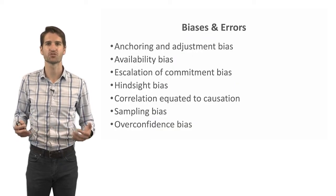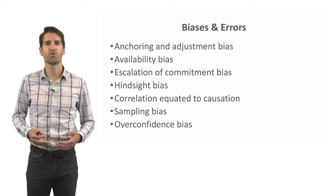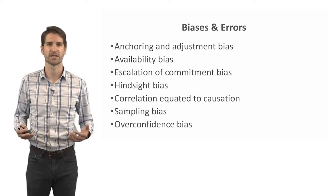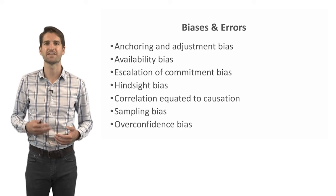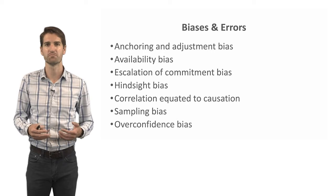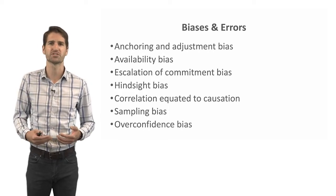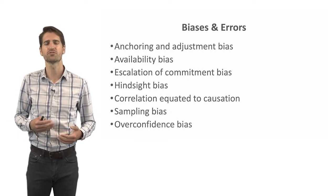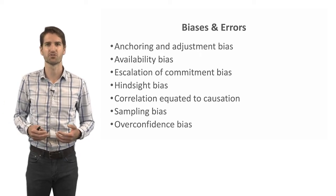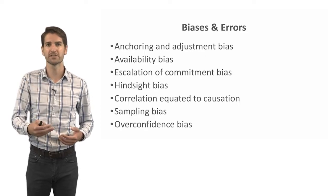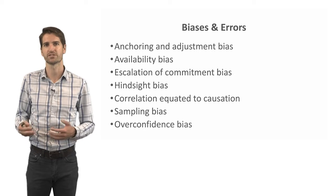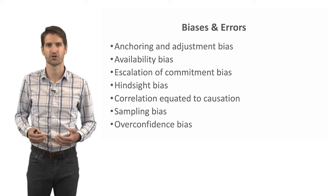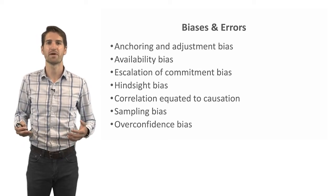Now let's discuss different human biases and errors in judgment and decision making. One of the biggest is anchoring and adjustment bias: we tend to anchor on or focus on certain bits of information at the expense of others. This information may have more or less truth to it, so we should be cautious. For example, when trying to identify drivers of high turnover among customer service reps, you might anchor on employee engagement simply because it's been discussed recently, even if it isn't actually a top driver of turnover in that group.